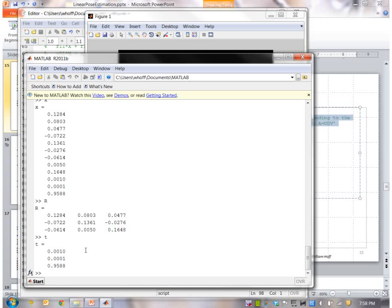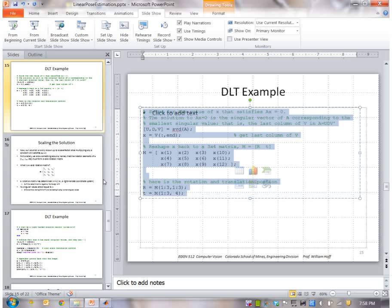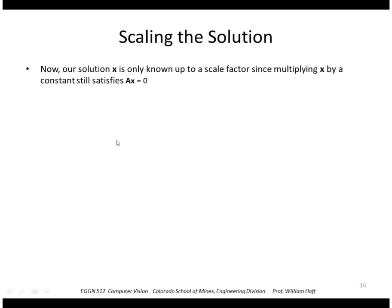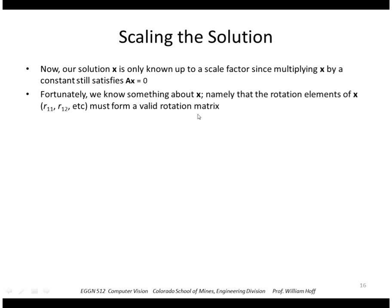We're not done here. We have to scale the solution. Remember that x is only known up to a scale factor since any multiplication of x still satisfies this constraint. But fortunately we know that x is actually a rotation matrix.